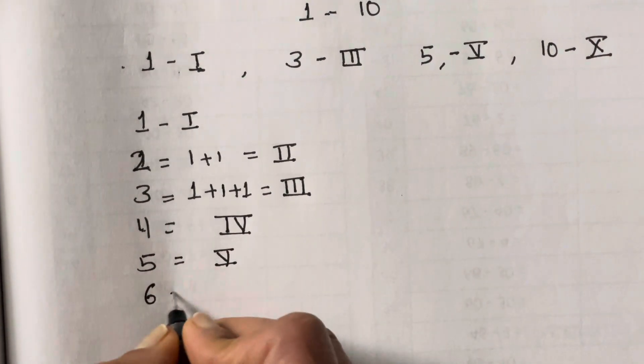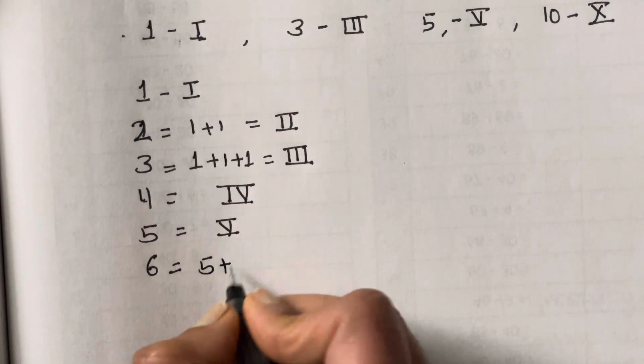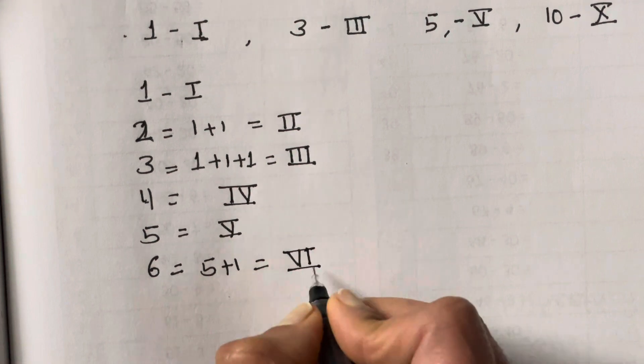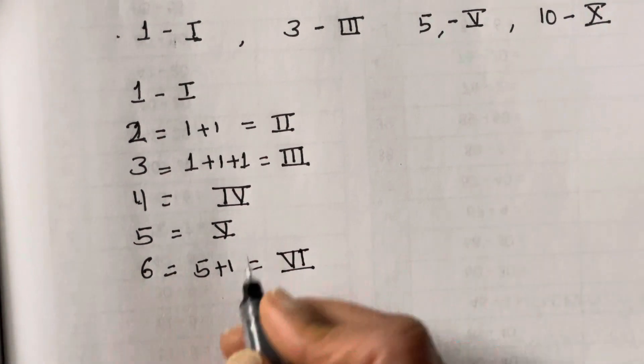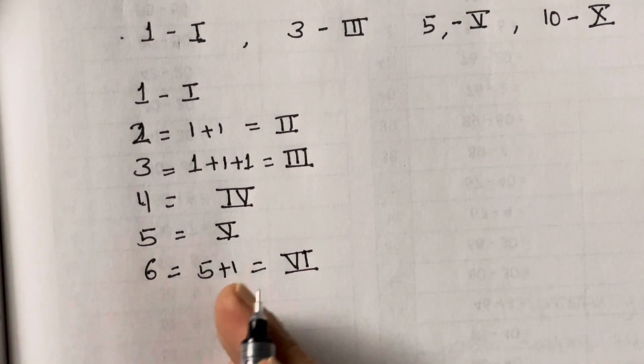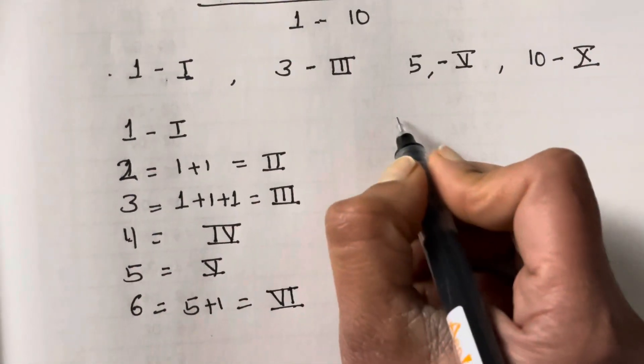Then 6, you can write as 5 plus 1, which is V plus I, so VI. So for minus, you write the 1 or 2 or 3 before the actual number, and for plus, you write it after.